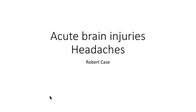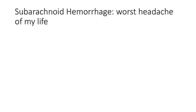We'll talk about acute brain injuries now — the big brain bleeds and headaches. Subarachnoid hemorrhage is what you should suspect any time a vignette tells you that a patient is having the worst headache of their life, or someone who said that followed by having an acute decompensation with somnolence or a coma.